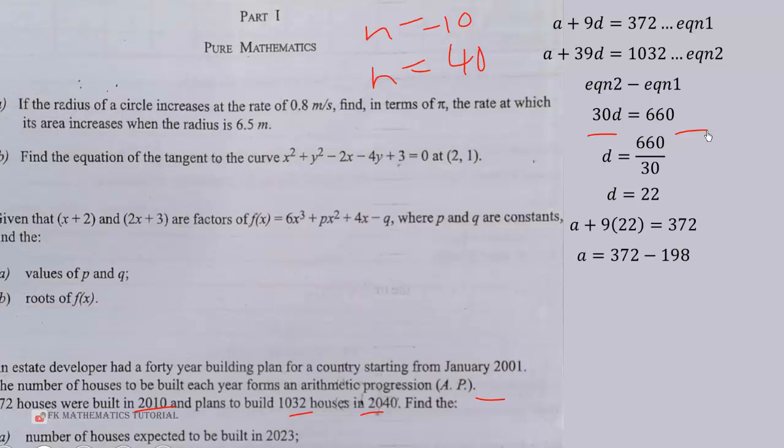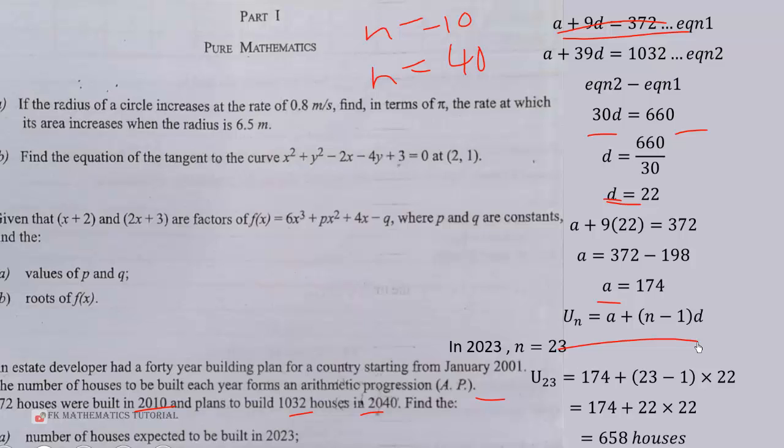So our a will be equal to, we substitute d into the first equation. Our a will be equal to 372 minus 198, which is 174. So we have a, we have d. We can now find the number of houses expected to be built in 2023. In that case our n will be equal to 23. So we use this formula, U sub n equals a plus (n minus 1) times d. So when we substitute n equals 23, we are getting 174 plus 22 times 22, which is 658 houses that is expected to be built in 2023.